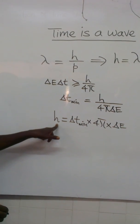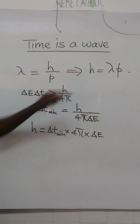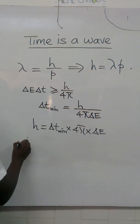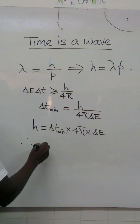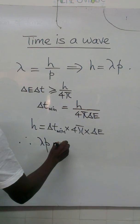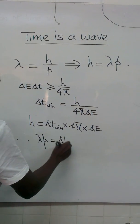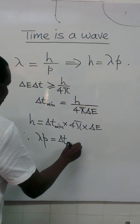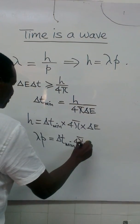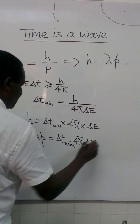This Planck's constant is the same as that Planck's constant, therefore we can equate these two. Therefore, lambda p must be equal to t-minimum times 4pi times uncertainty in energy.